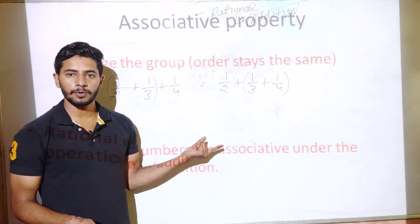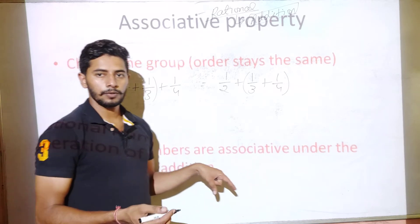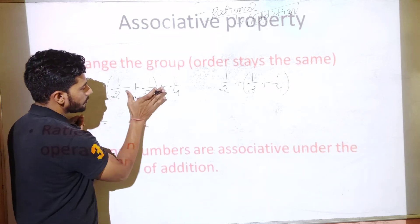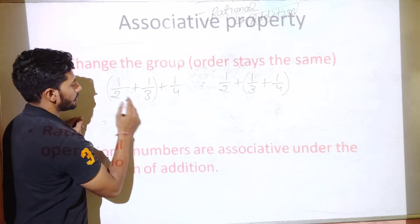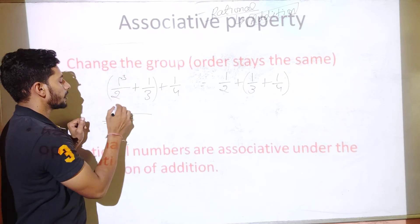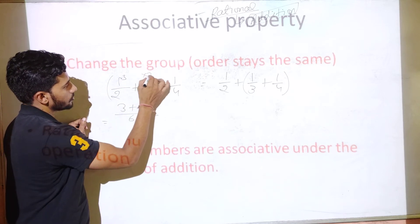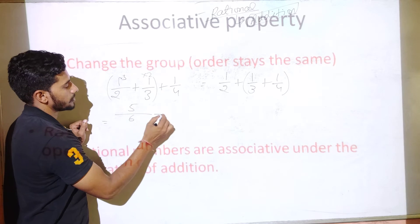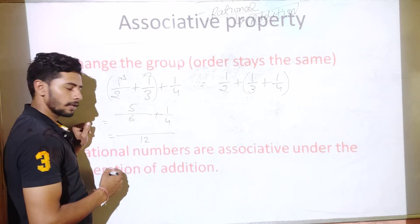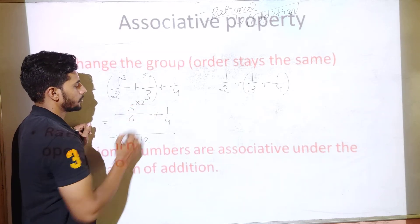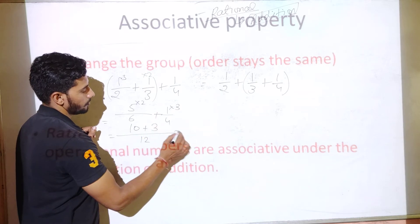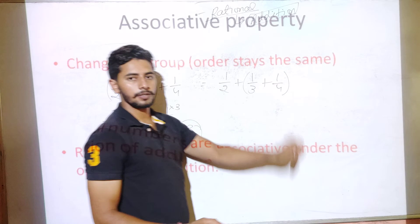You would have studied these properties in Class 7 as well. Let's solve it: for (1/2 + 1/3) + 1/4, the LCM of 2 and 3 is 6. So 1/2 + 1/3 = 3/6 + 2/6 = 5/6. Then 5/6 + 1/4: the LCM of 6 and 4 is 12, giving 10/12 + 3/12 = 13/12.